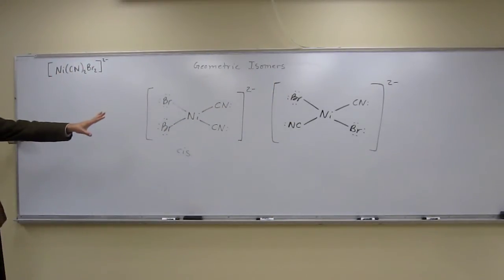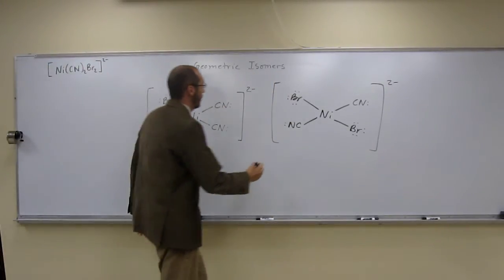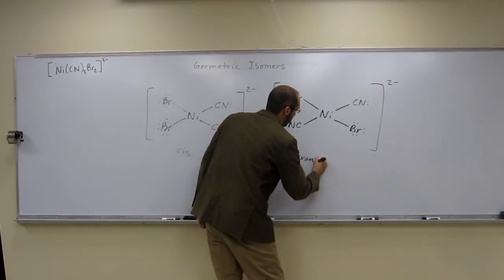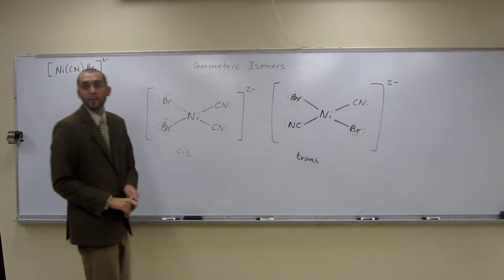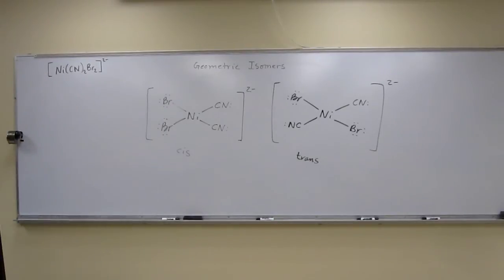So this geometric isomer is called the trans-isomer. So that's when the same groups are opposite of each other, okay? So let's just look at what these two look like.